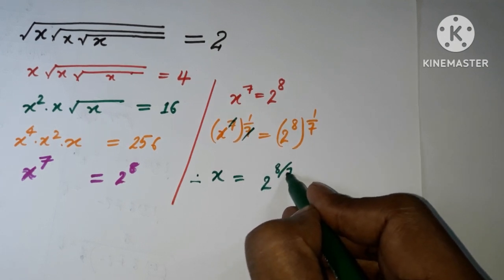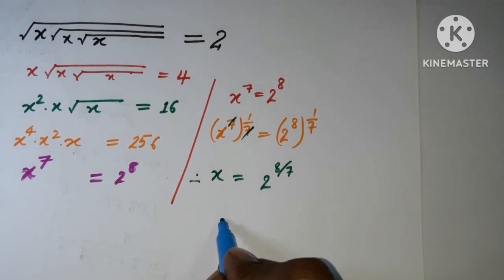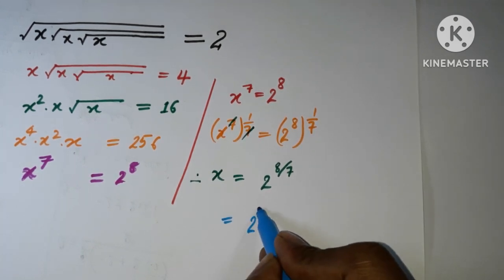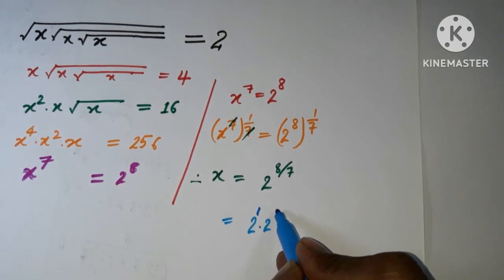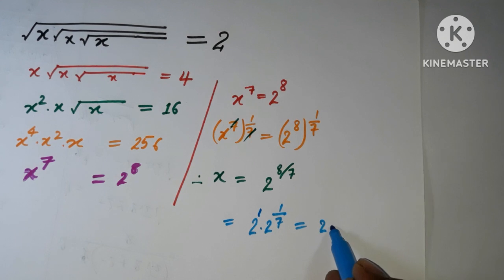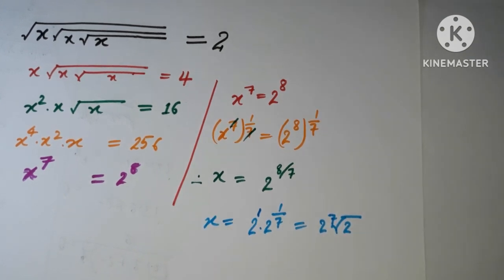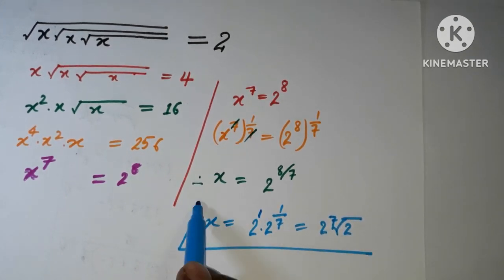Obviously we can write it in a different way: 2 to the power 1, and we have 2 to the power 1 upon 7. That can be written as 2 times 2 to the power 1 over 7. So in this way we can write the value for x, and this is our solution.